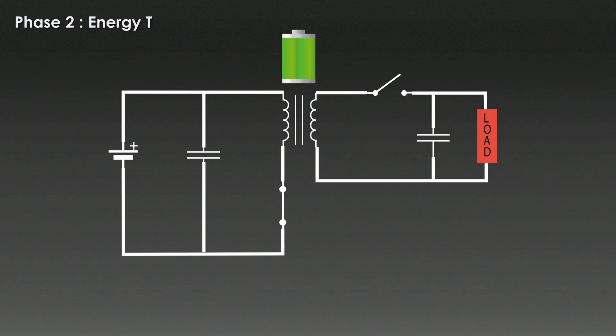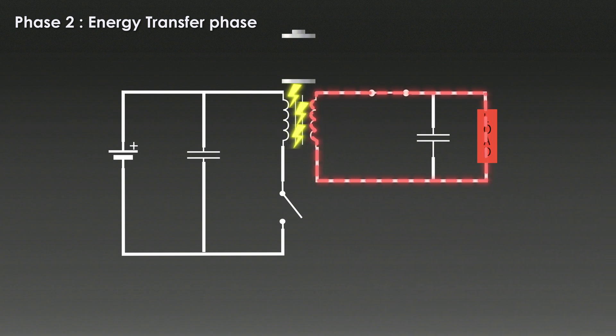In the next phase, which is energy transfer, when the MOSFET is turned off, the magnetic field in the transformer collapses. This collapsing field induces a voltage in the secondary winding of the transformer. The rectifying diode on the secondary side becomes forward biased, which allows energy to flow into the output capacitor and to the load. This phase is like pouring water from the bucket into a tank. The stored energy is transferred to the output, smoothing out the output voltage and powering the load.